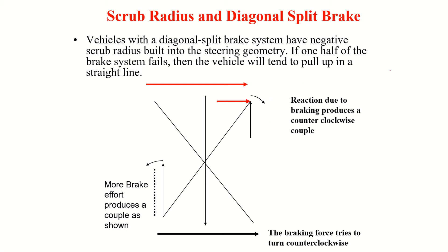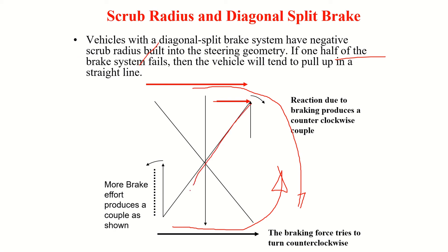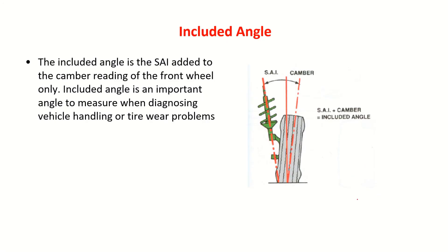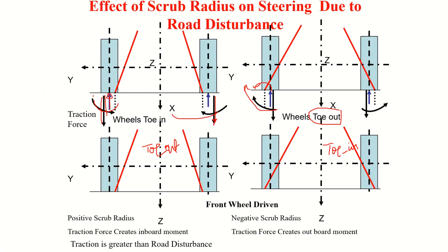Now, if you have a split braking or diagonal split braking condition, with negative scrub radius the forces create a counterclockwise couple on one side and a clockwise couple on the other. About the respective pivot points, these opposing couples try to maintain the vehicle straight even during braking, making the vehicle more safe. So negative scrub radius with diagonal split braking helps maintain straight-line stability.